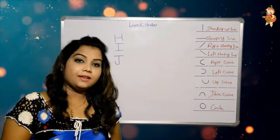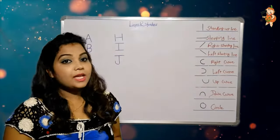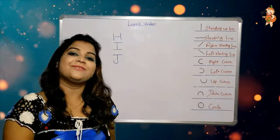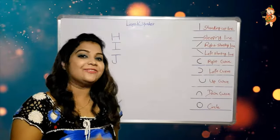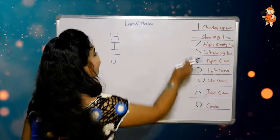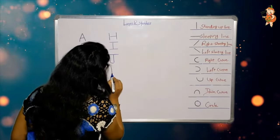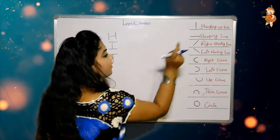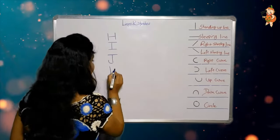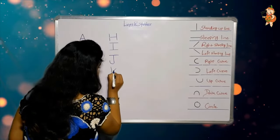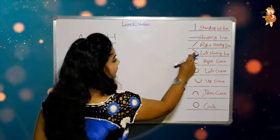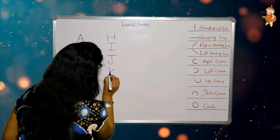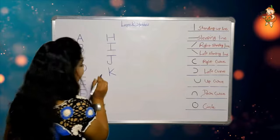It's time to make K — now you tell me how to make K. One standing up line, one standing up line, one right slanting line, and one left slanting line. It's K.